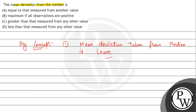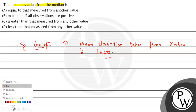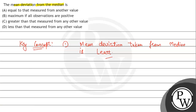So now, is key concept को use करके question को solve करते हैं. Statement में क्या given है? Mean deviation from median is — A, B, C, D options given है. Find out from any other value. So from here, the value of mean deviation is minimum.